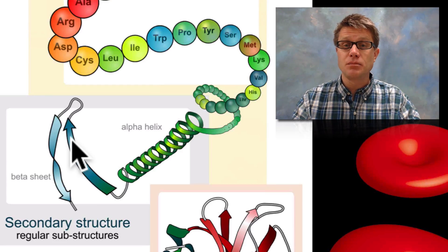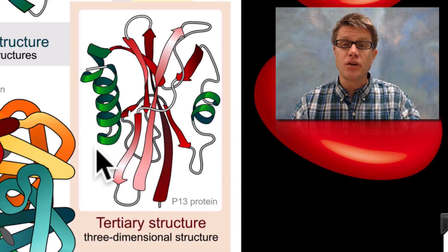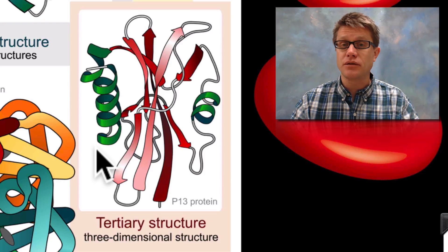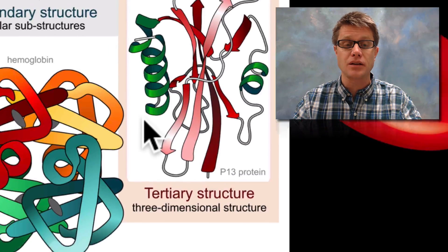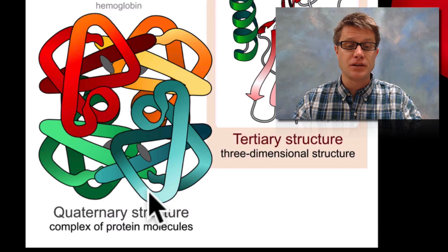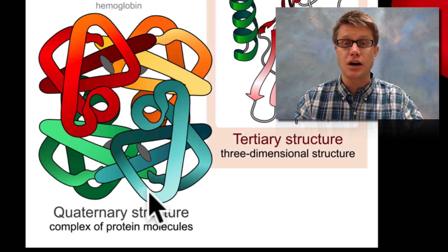These alpha helices and beta pleated sheets then are going to fold on top of each other where we have hydrophobic regions moving to the inside, hydrophilic on the outside. We have all these dispersion forces that are holding different parts of that molecule together. And so eventually we're going to have this multipolypeptide protein form that does its specific job.